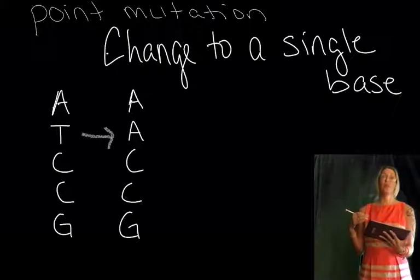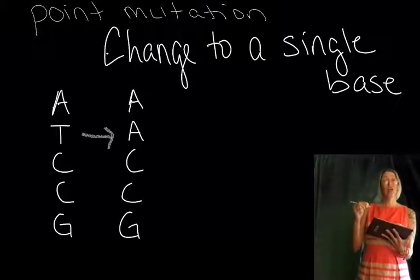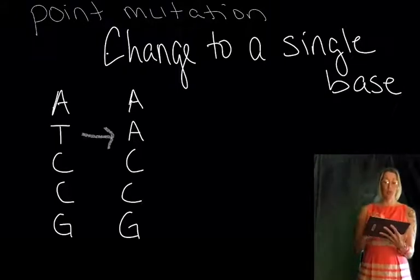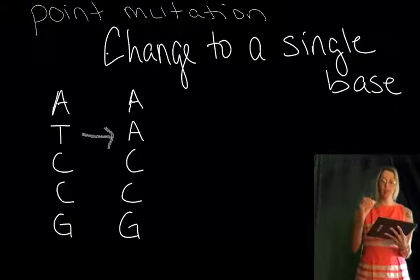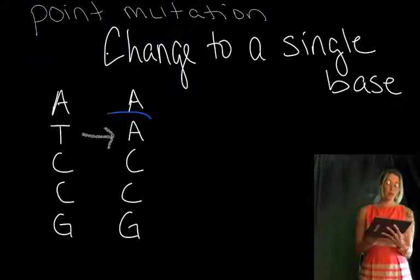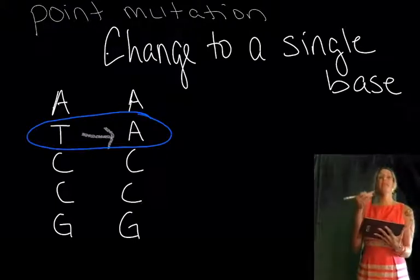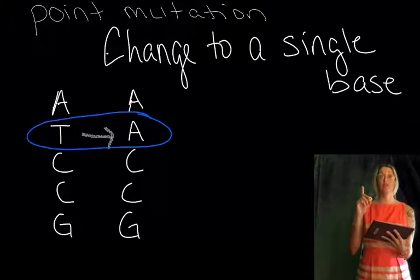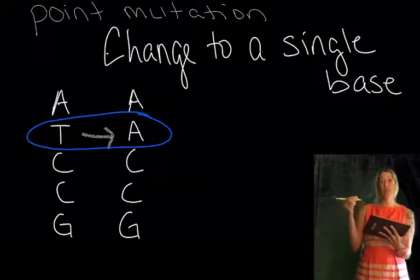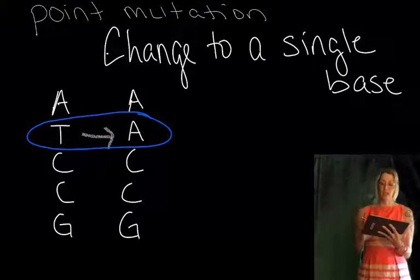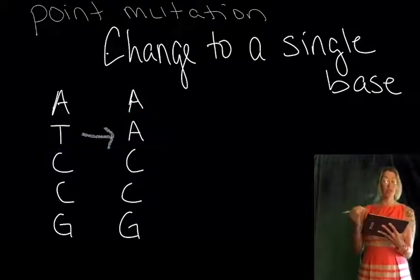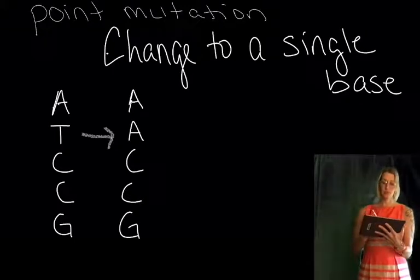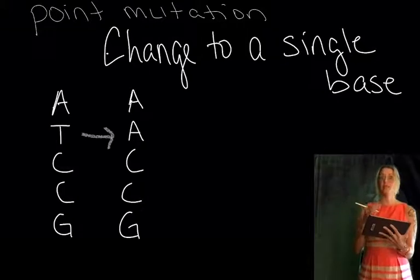One of the things we can talk about when we're talking about change at the level of DNA is called a point mutation, so it's a change at a single point, a change to one single base. Here, only in this sequence, only one base changed. This is a point mutation: T changed to A.